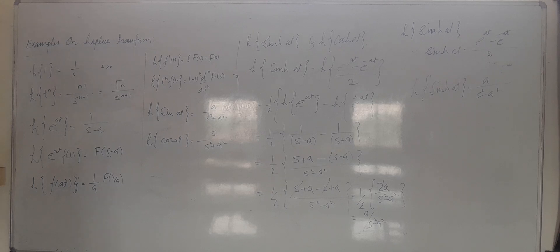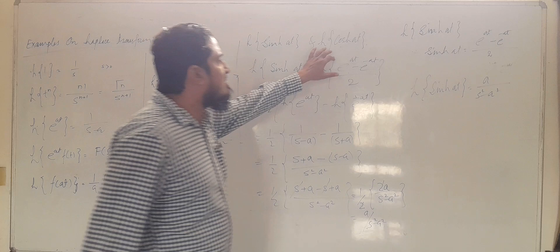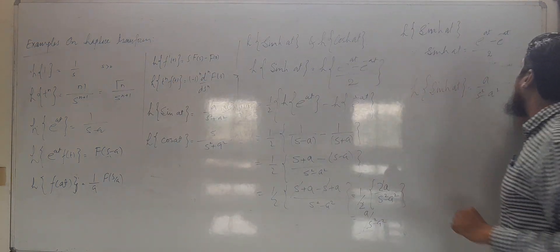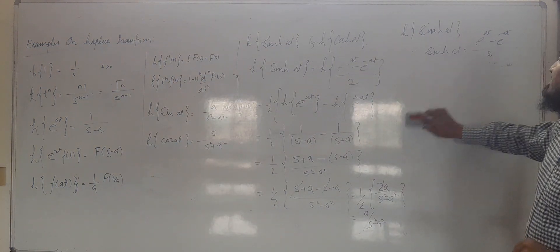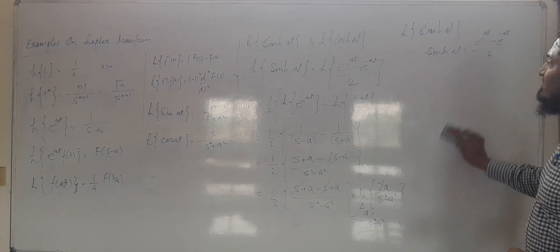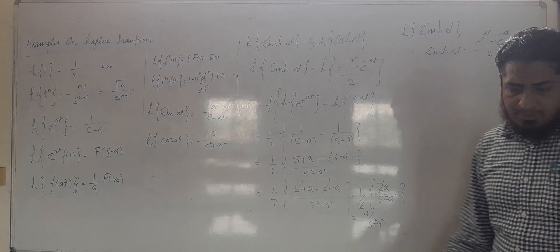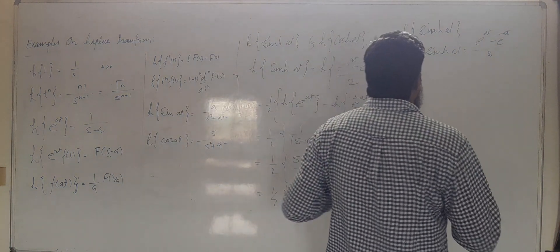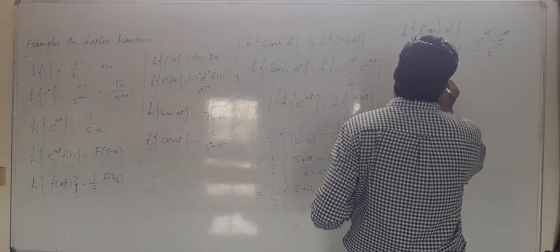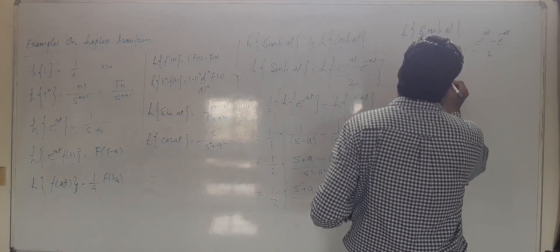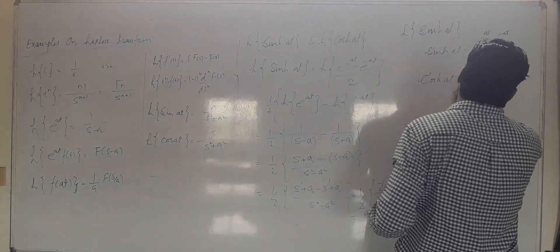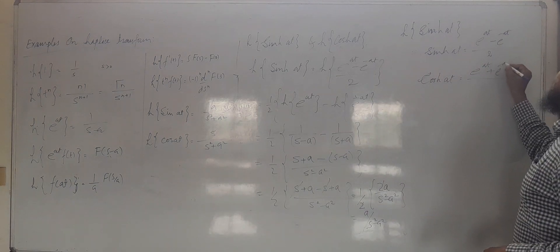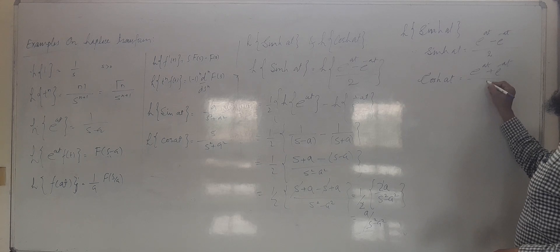So the Laplace Transform of sinh(at) is equal to a upon s squared minus a squared. Now we will find the Laplace Transform of cosh(at). We know that hyperbolic cos at equals e raised to at plus e raised to minus at upon 2.